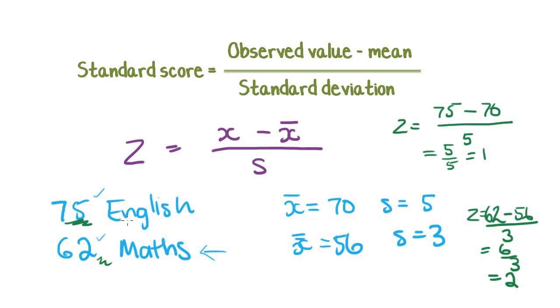So now I ask again, which of these two scores was better? Because this was actually higher above the mean than this one was, they were both above average. So you're a smart cookie. You're doing quite well in both of these tests. You're doing better than the average of the class. But in this one, you did even better. So maths is actually a better score.